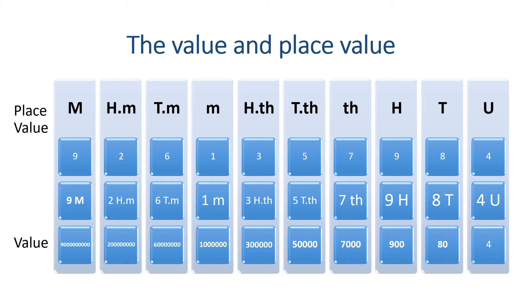Now let's find the value of each digit. The value of nine is nine milliard. The value of two is two hundred million. The value of six is sixty million. The value of one is one million. The value of three is three hundred thousand. The value of five is fifty thousand. The value of seven is seven thousand. The value of nine is nine hundred. The value of eight is eighty. The value of four is four.